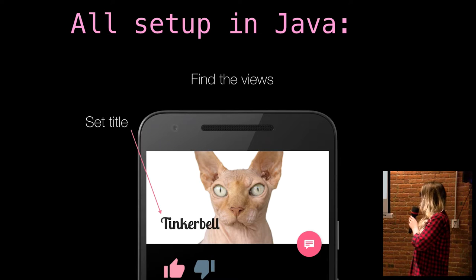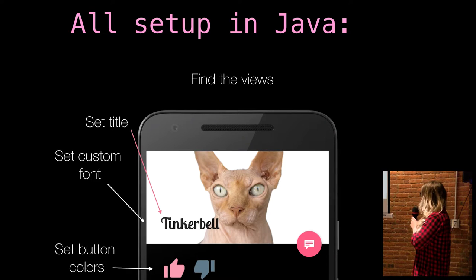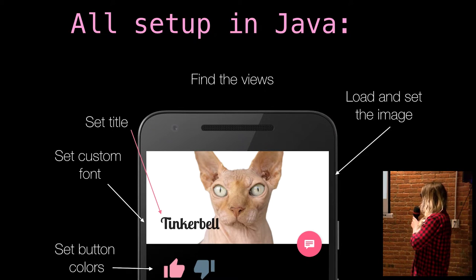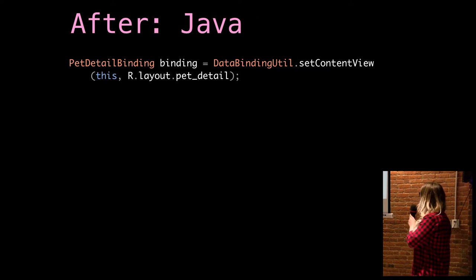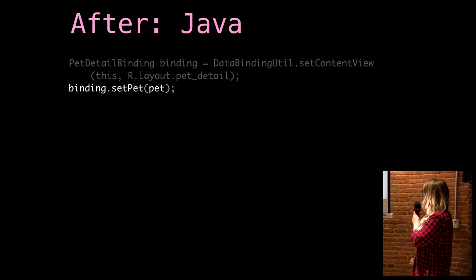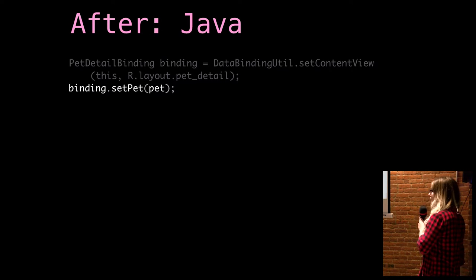So all the setup for this particular view would have to be done in Java. You have to find the views, you have to set the title — this is a collapsing toolbar layout. You have to set a custom font, set the button colors for the vote up and vote down, and you have to load and set the image.